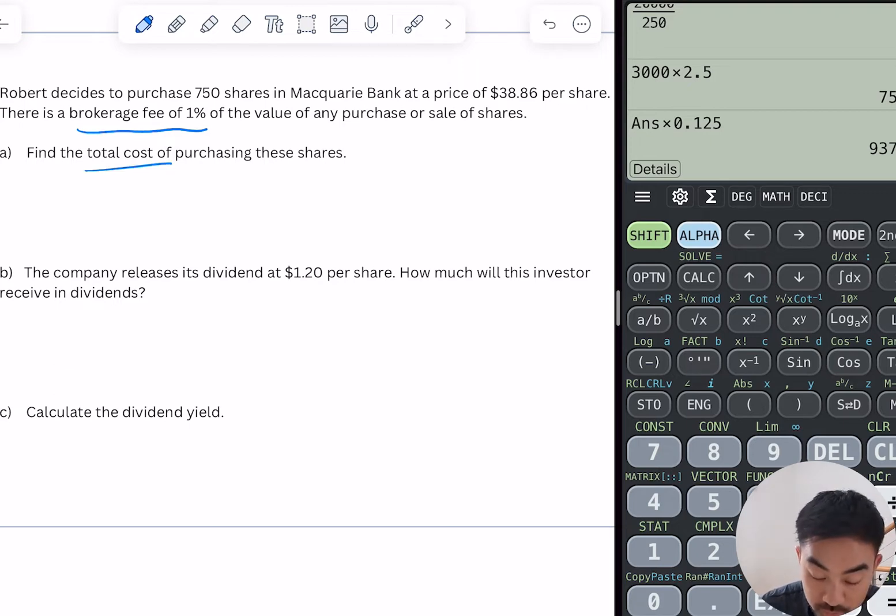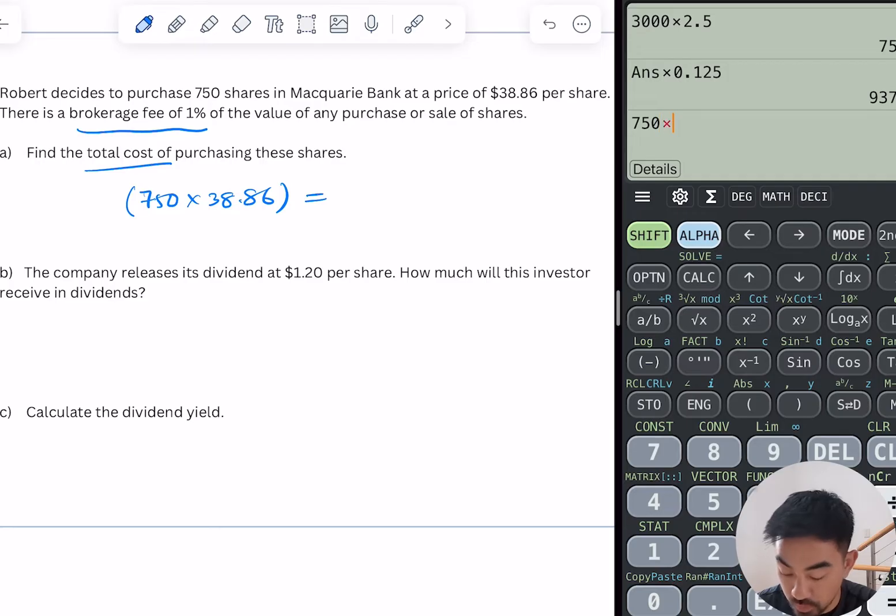So first of all, let's just start with what all the shares are worth. Well, it's gonna be 750 because there's 750 of them, times $38.86. That's the total value of the shares that he's buying.